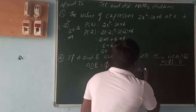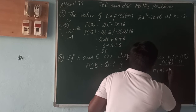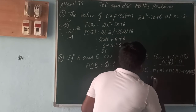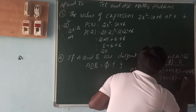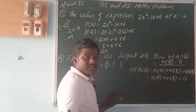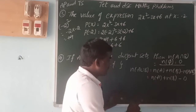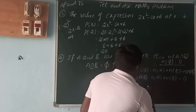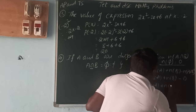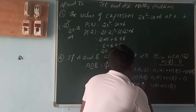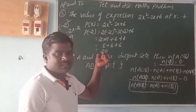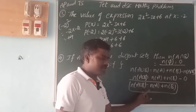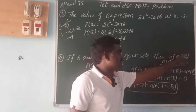Using the union formula: n of A union B equals n of A plus n of B minus n of A intersection B. Since n of A intersection B equals 0 for disjoint sets, n of A union B equals n of A plus n of B. So when A and B are disjoint sets, n of A union B equals n of A plus n of B.